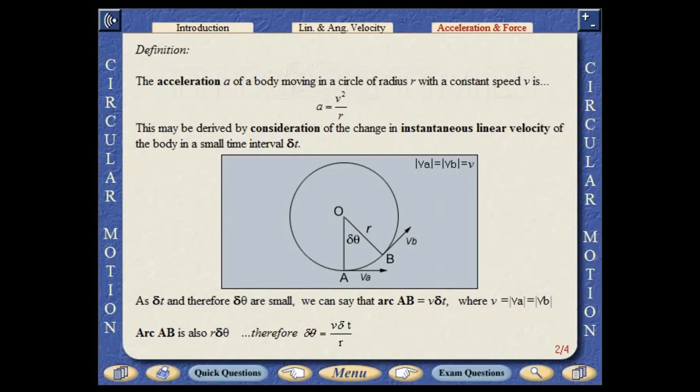The acceleration a of a body moving in a circle of radius r with a constant speed v is equal to v squared divided by r. This can be derived by consideration of the change in instantaneous linear velocity of the body in a small time interval.